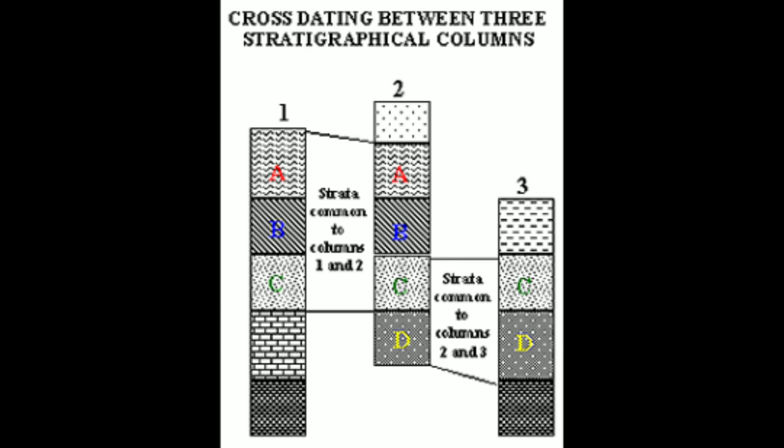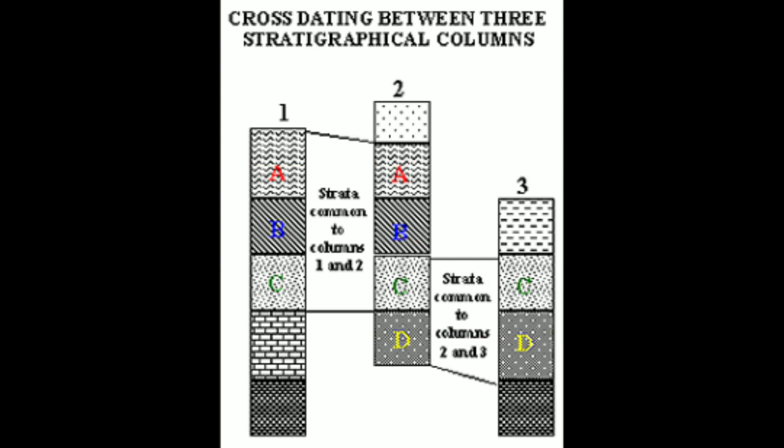Cross dating is the method of dating objects, fossils, or rocks by using the chronology of another site. It is a technique used to take advantage of consistencies in stratigraphy between parts of a site or different sites, using objects or strata with a known relative chronology.